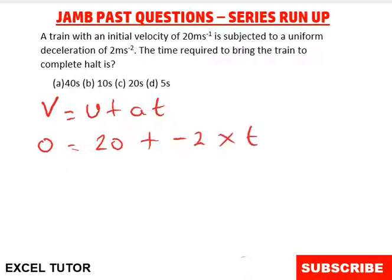So that becomes minus 20, that's if 20 here comes to the back, equals minus 2 t. Dividing both sides by minus 2, our answer is going to be t equals 20 divided by 2 equals 10.